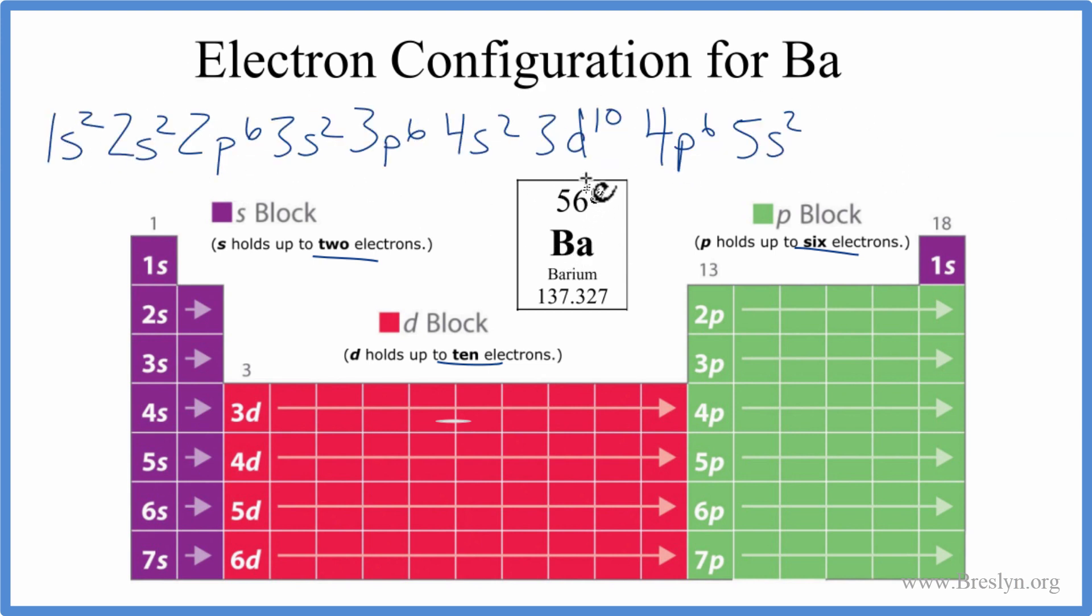We've used 38 electrons, so we still have a ways to go. After 5s, we'll go to 4d, we'll put 10 in there. Now that's 48.